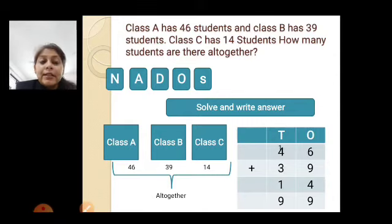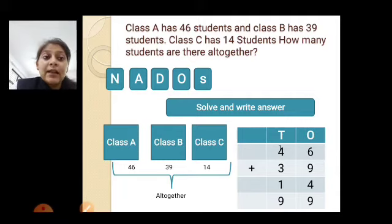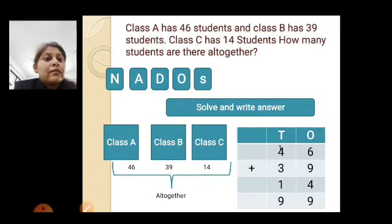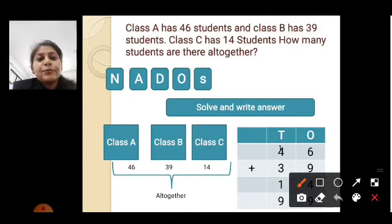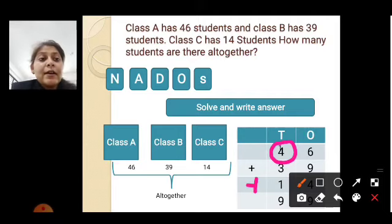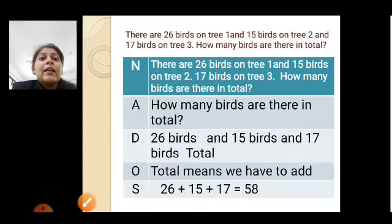Here, 46 plus 39 plus 14. So, 6 plus 9 is 15. 15 plus 4 is 19. So, 19 - we write 9 in the answer. One, we carry to the tens place. See, we carried one here. Nineteen came as the answer. We carried one here. One plus four is equal to five. Five plus three is eight. Eight plus one is nine. So, our answer is ninety-nine.